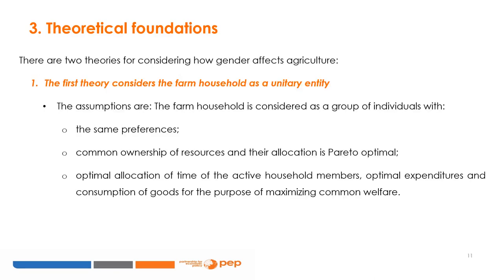In practice, there are two theories for considering how gender affects agriculture. The first considers the farm household as a unitary entity and is based on the assumptions that the farm household is considered to be a group of individuals with the same preferences, individuals within the same household have common ownership of resources, and their allocation is Pareto optimal. The allocation of time, expenses, and consumption of goods of the active members of the same household are optimal.